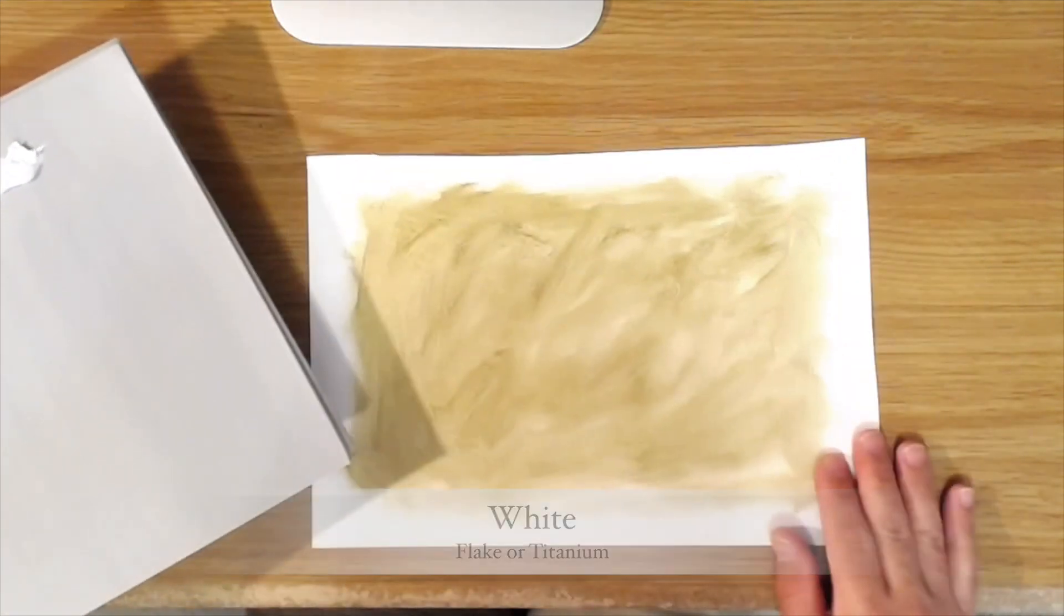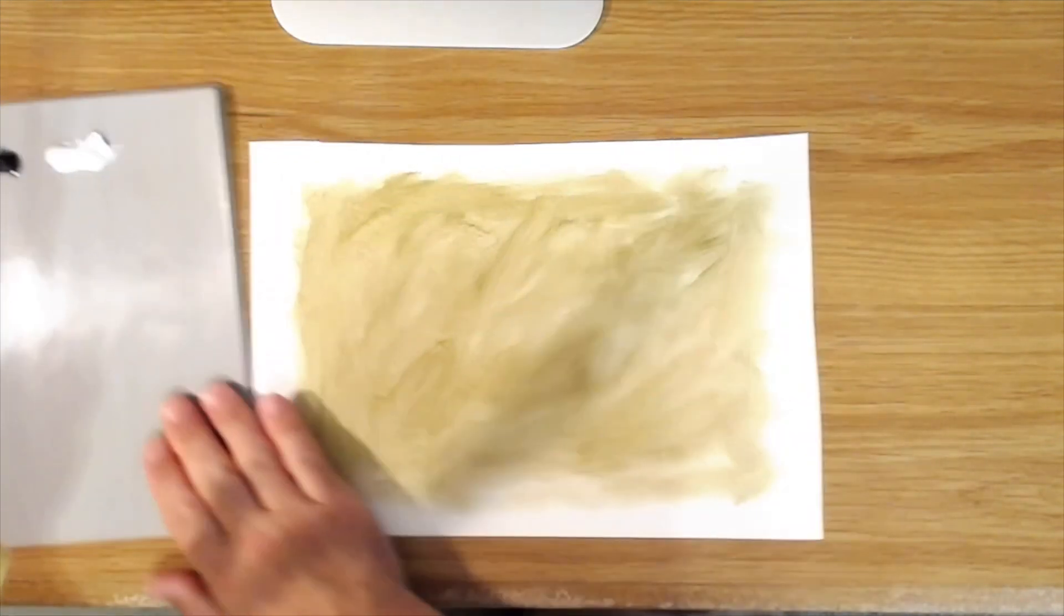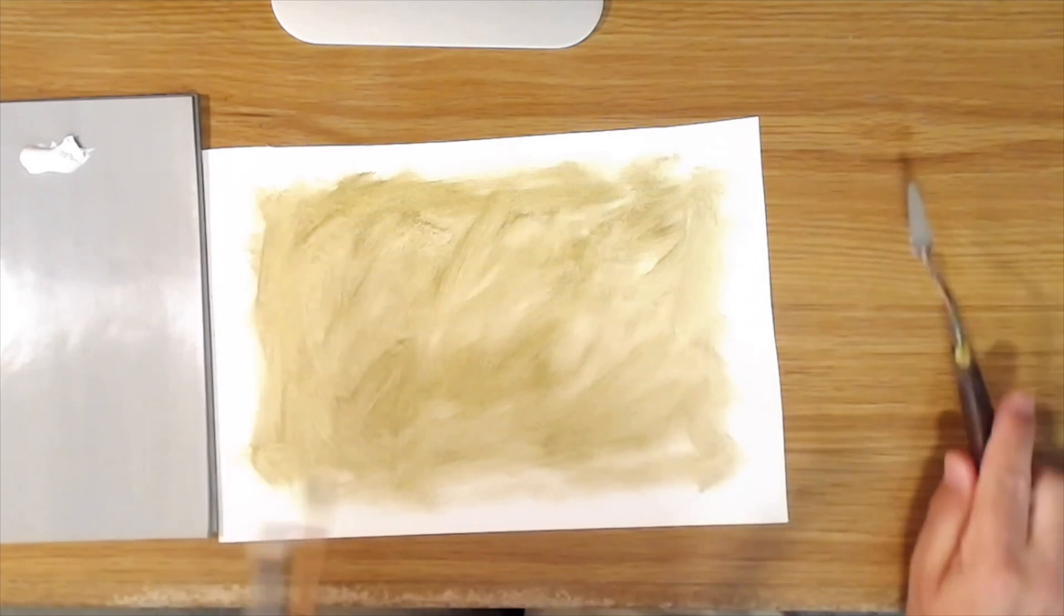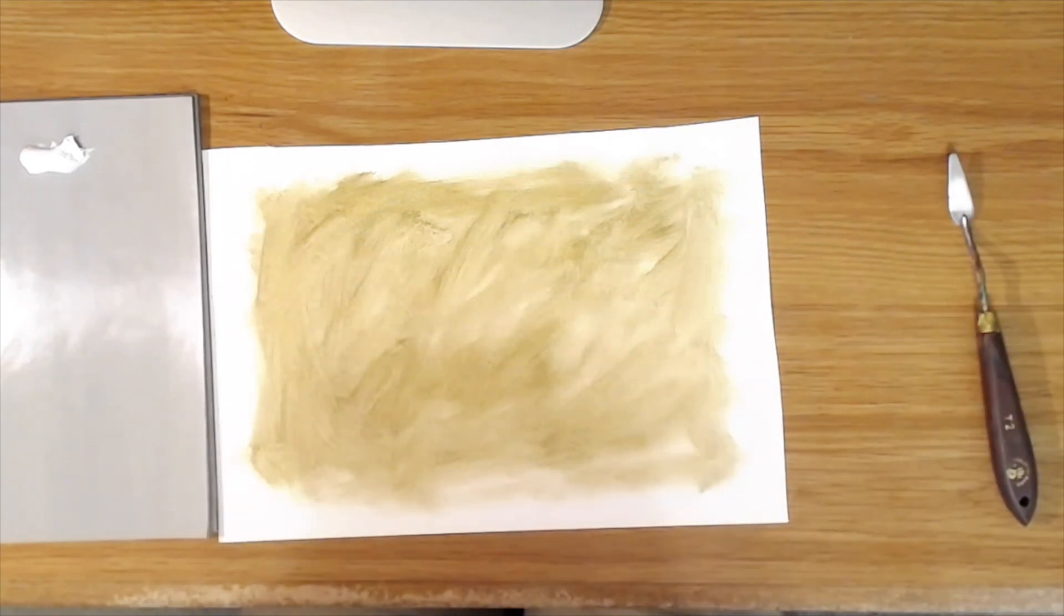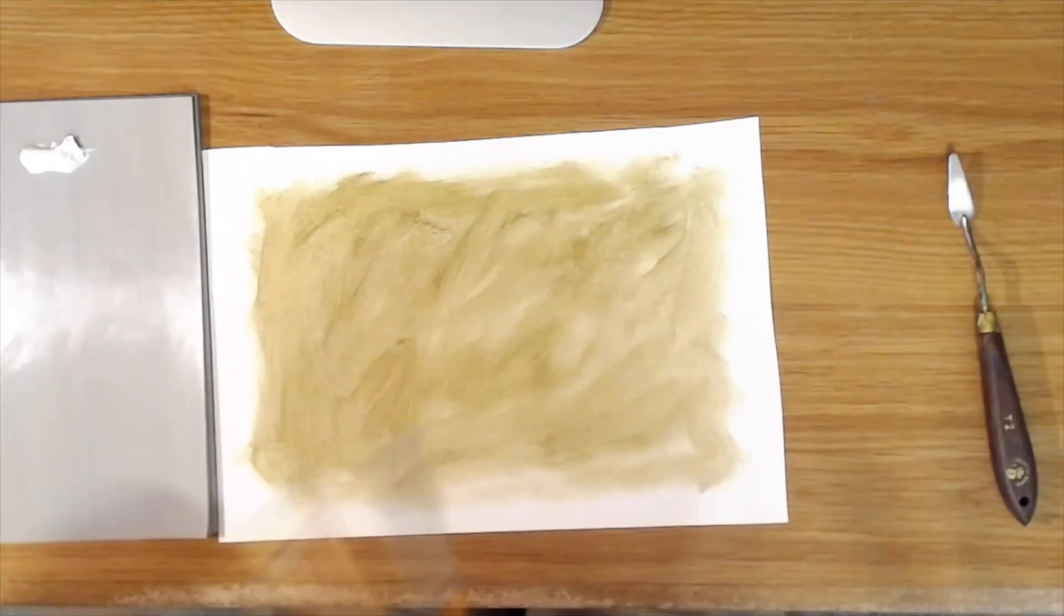I've got a toned canvas piece here that I toned just to get rid of the white that we can work on. I've got this simple picture of a brass bowl, and that's what we're going to use today to do our demo.